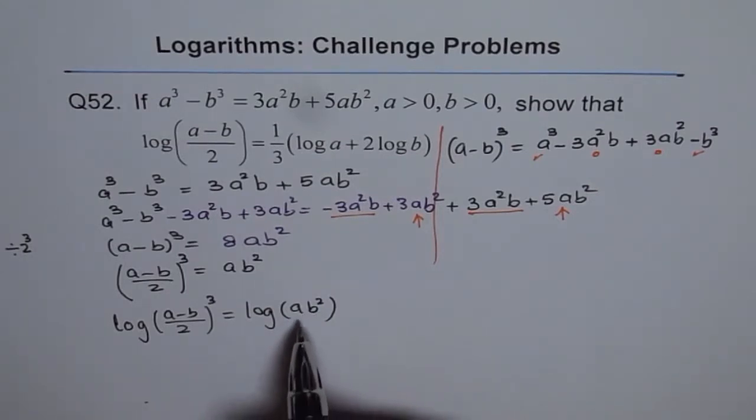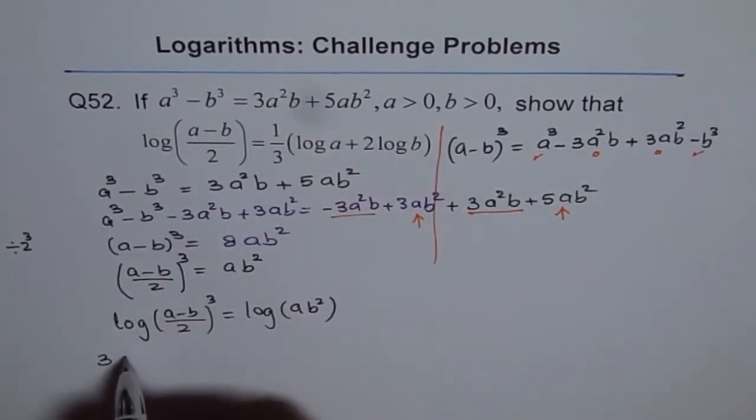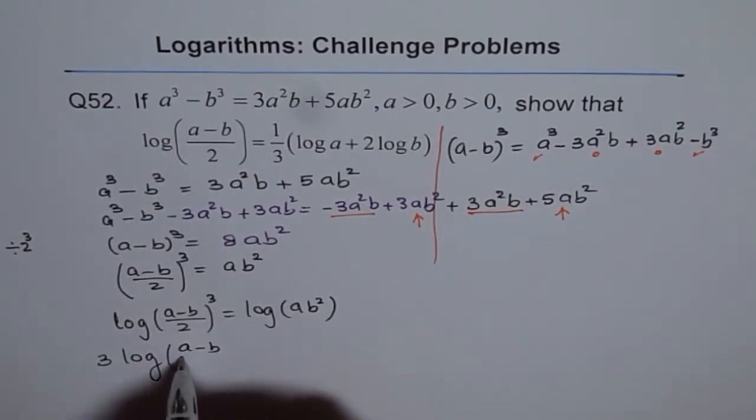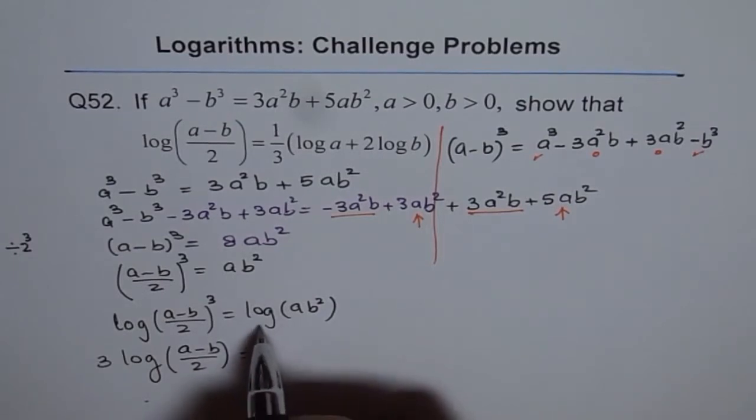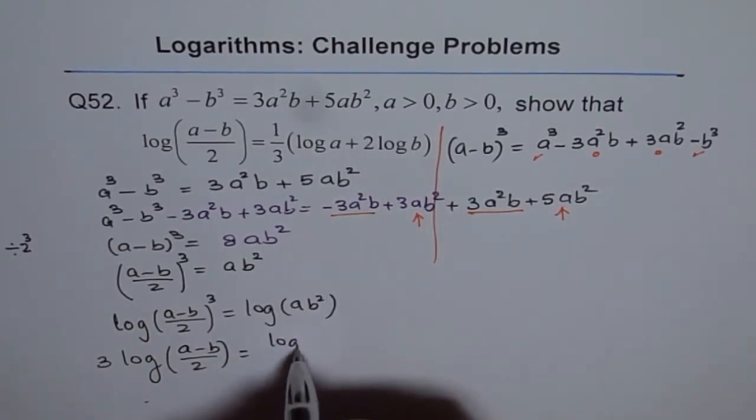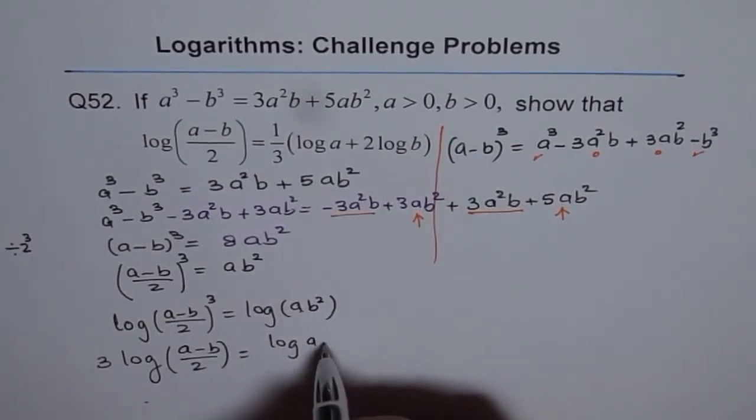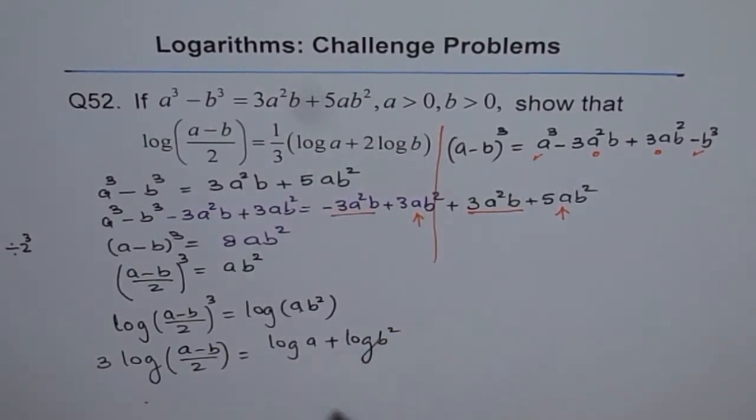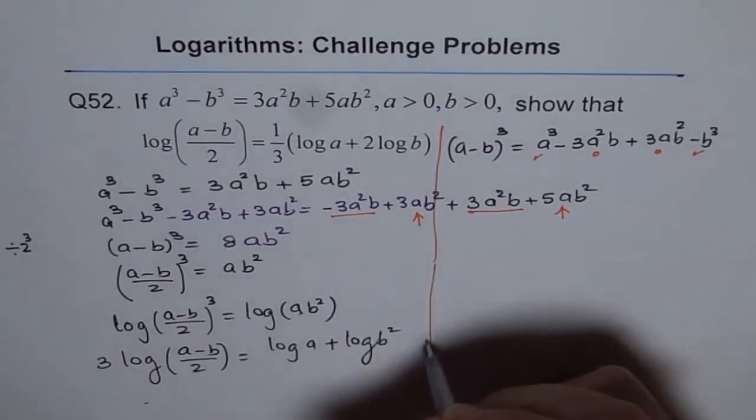That will probably give us this. So, we get here 3 times log of a minus b over 2. And here, we get log of a plus log of b square. Now, we will further simplify this. We will take this equation to the right side.